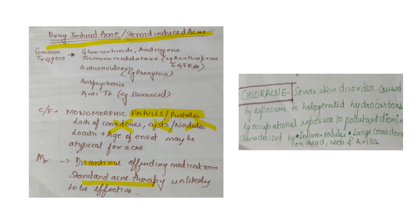Chloracne is a skin disorder caused by halogenated hydrocarbons. It is also a type of substance-induced acne, mostly due to occupational exposure to the pollutant dioxin. It is characterized by nodules and comedones — which are not present in drug-induced acne — and appears on easily exposed areas like the head, neck, and axilla.